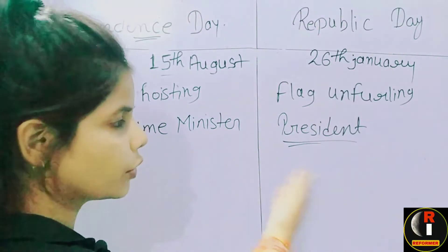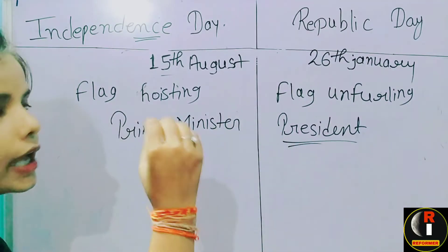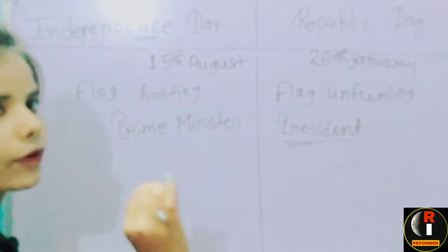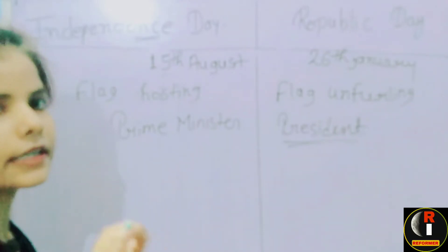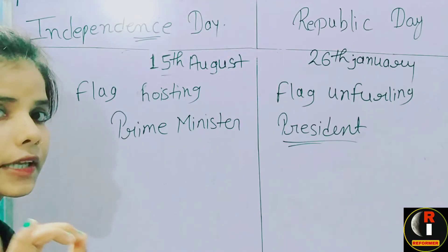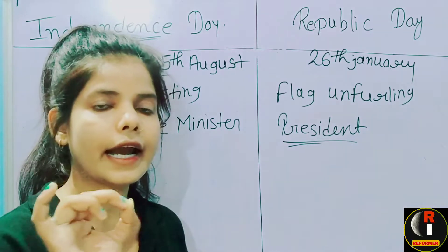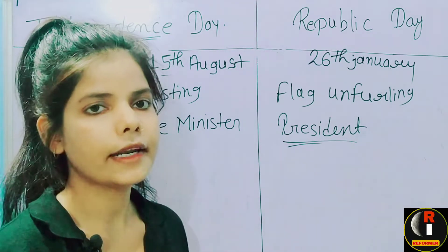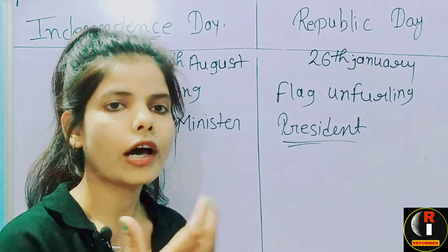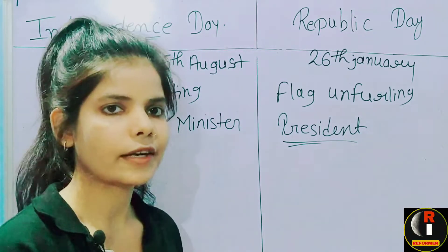What is the difference between these two? The fact is that on August 15th, 1947, our Constitution was not ready for Bharat. When was it ready? On 26th of November 1949, it was adopted by our Bharat, and on 26th of January 1950, it was taken into effect.